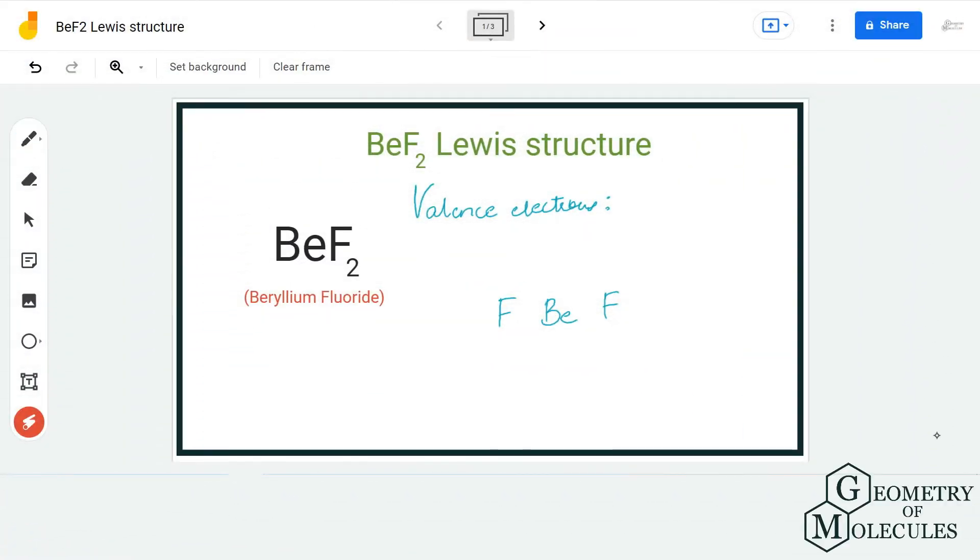Hi guys, welcome back to our channel. In today's video we are going to determine the Lewis structure for BeF₂, the chemical formula for beryllium fluoride. To find out its Lewis structure, I am first going to calculate the total number of valence electrons.